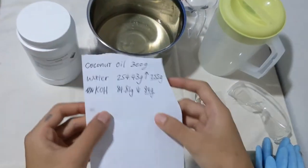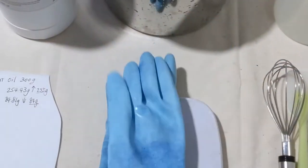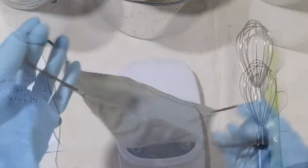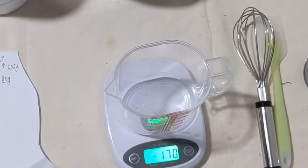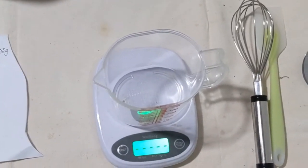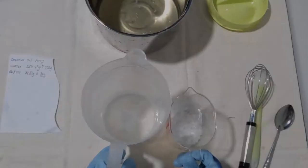And lastly, we will measure potassium hydroxide. For this part, we'll be putting our safety gear on: rubber gloves, goggles, and mask. Use a dry lye-safe container and tare the scale. And here, I have 84 grams of potassium hydroxide.